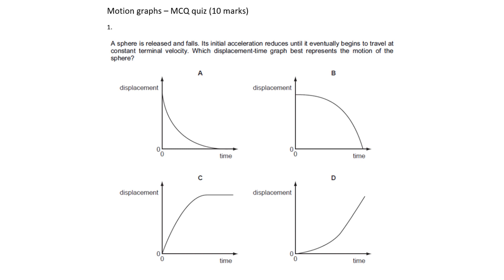Question one: a sphere is released and falls. Its initial acceleration reduces until it eventually begins to travel at constant terminal velocity. Which displacement-time graph best represents the motion of the sphere?